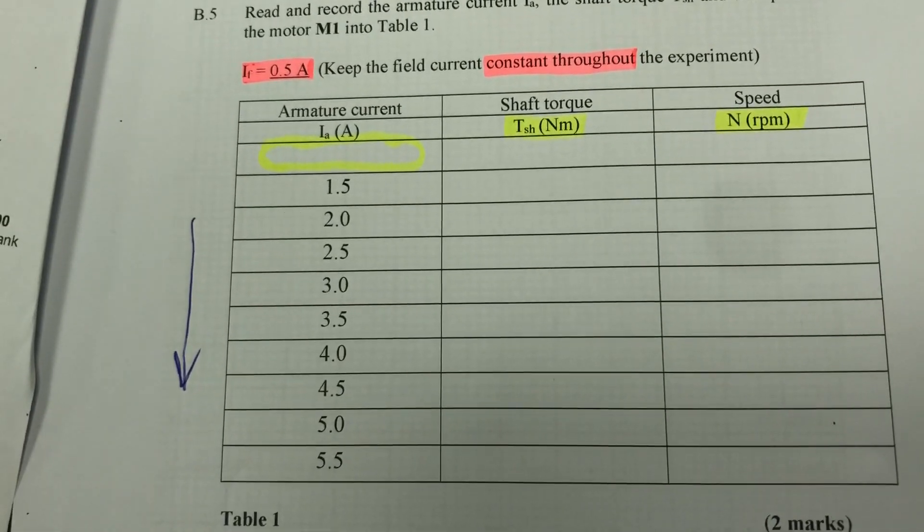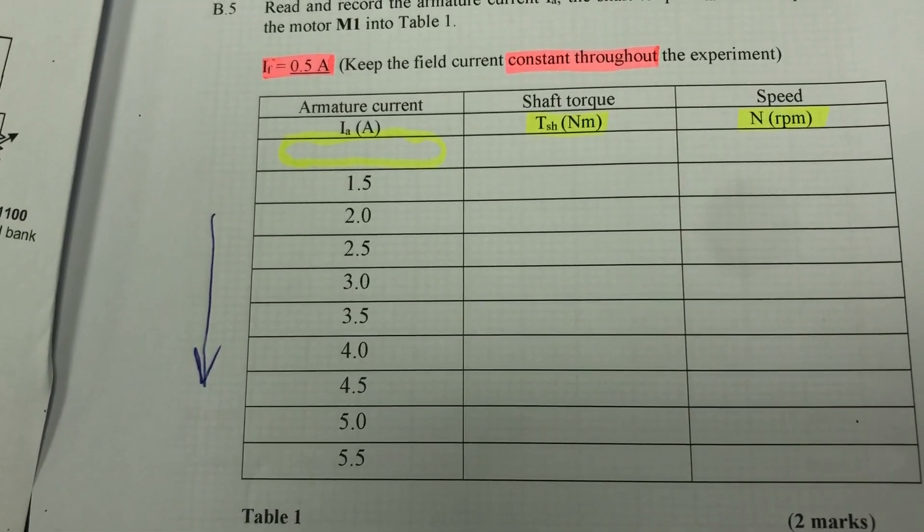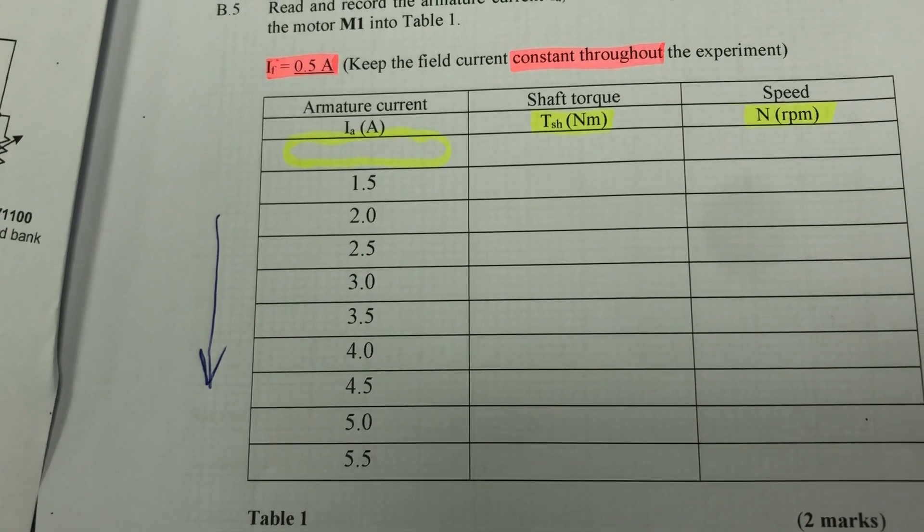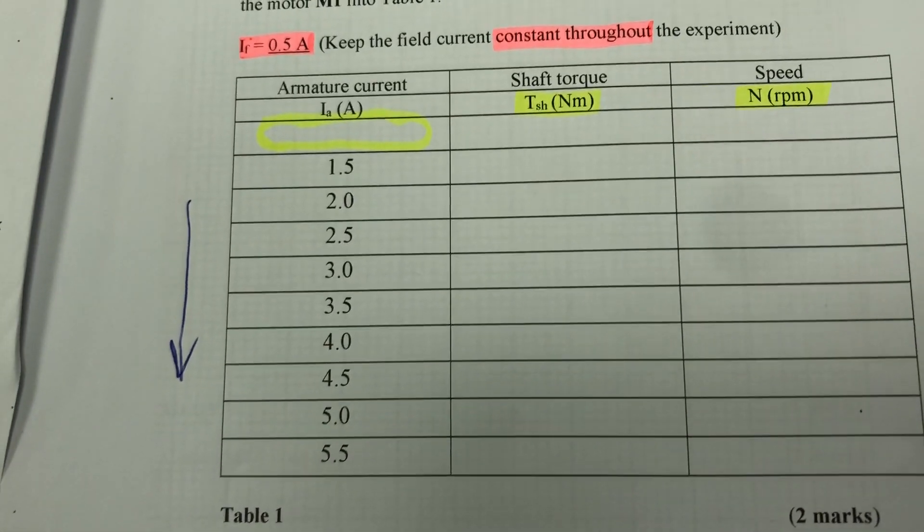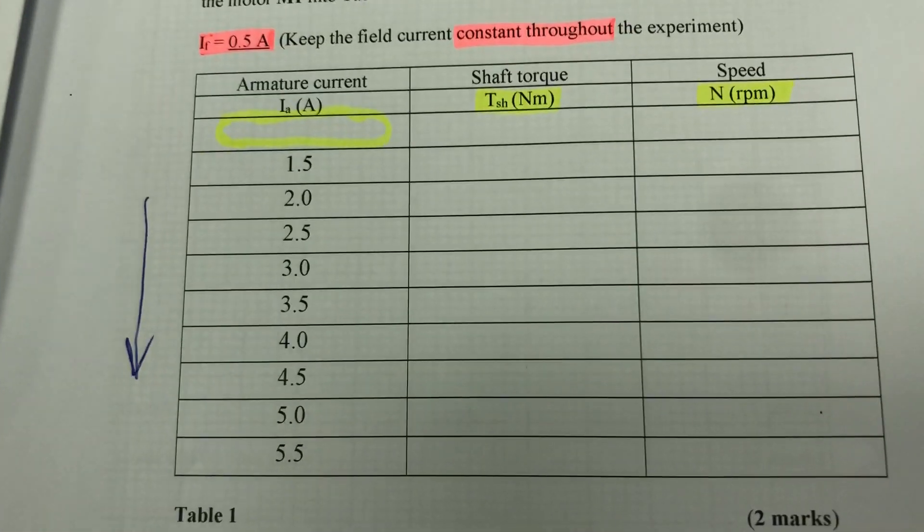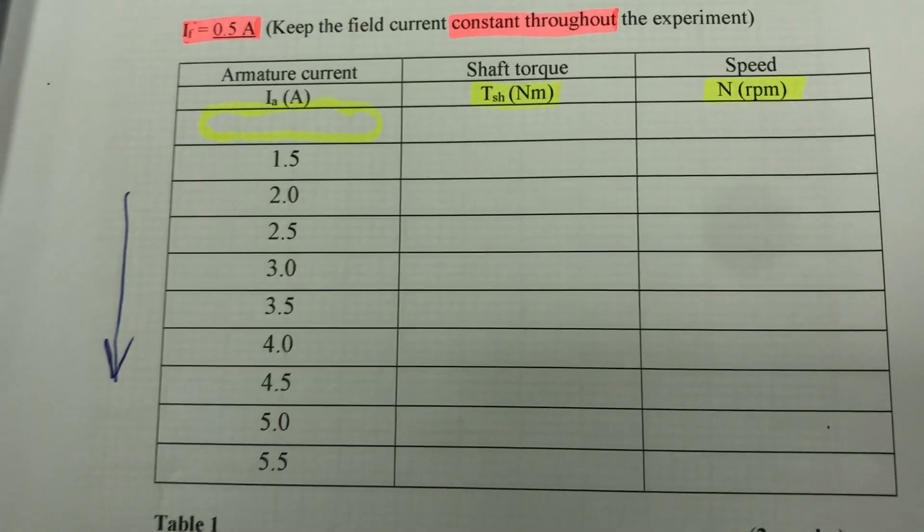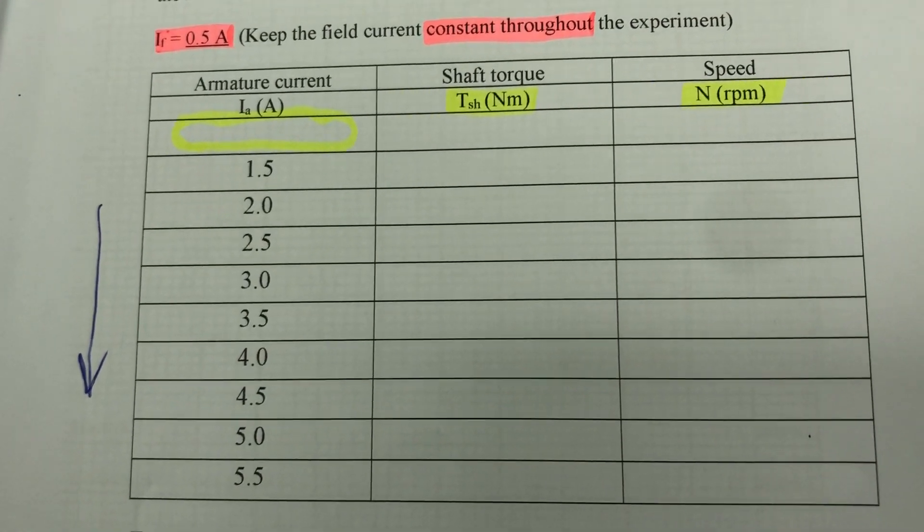So in this table, what we will do is to increase the armature current due to loading. Because when load increases, the armature current increases.